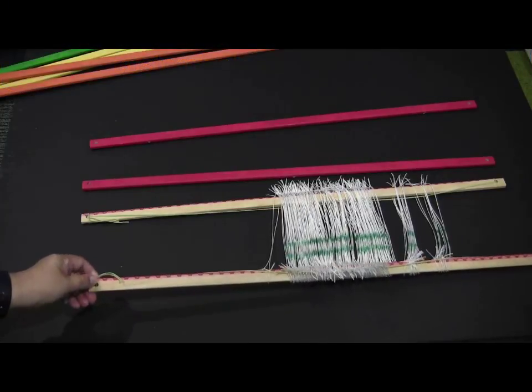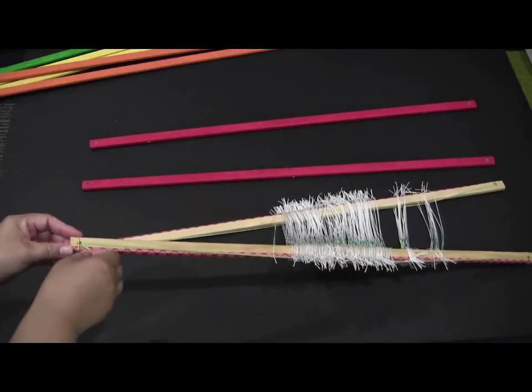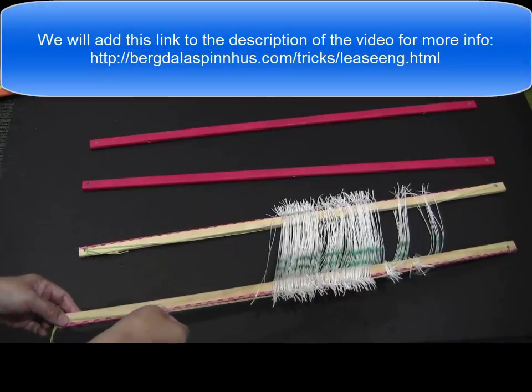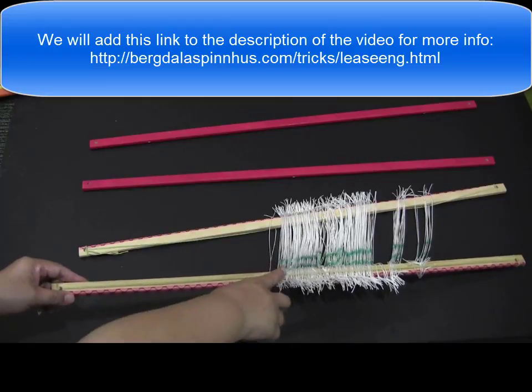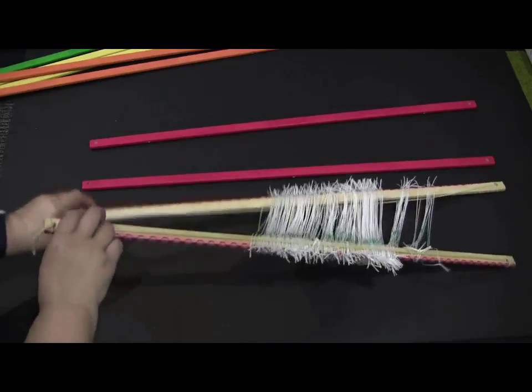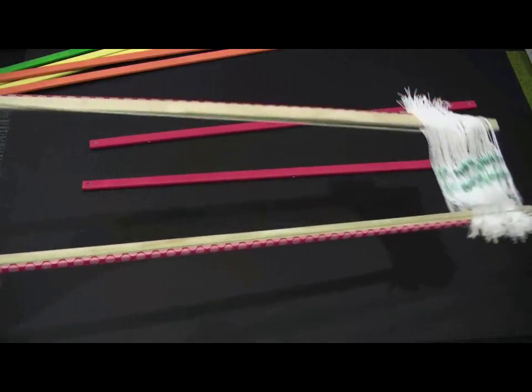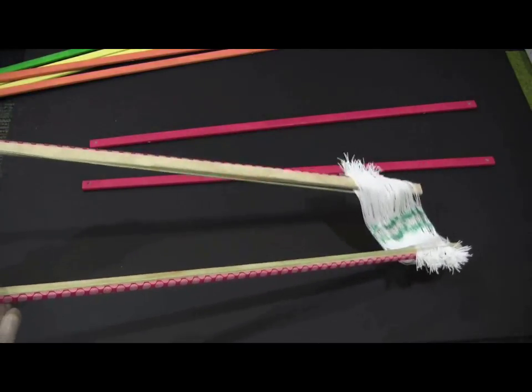So now the other thing that we learned from Ravelry actually is this little trick here. We've got this string that holds the heddles on. And the reason we do that is because if something like this happens you see the heddles don't fall off. And yes if it can happen it has happened to our geese.